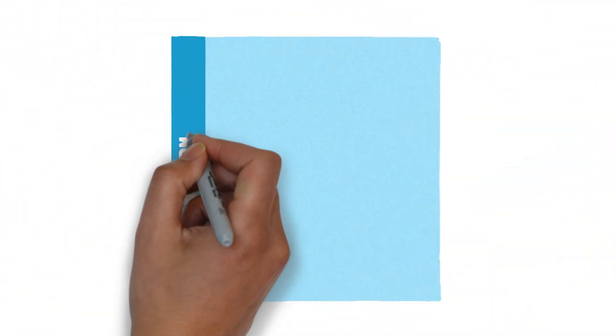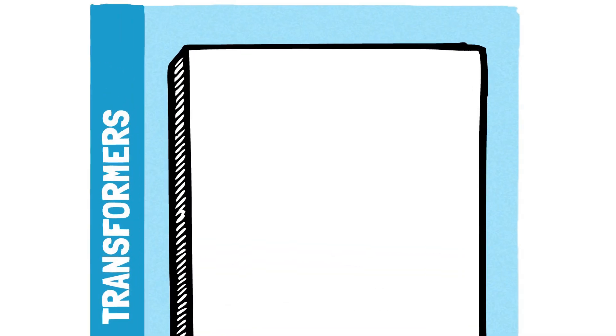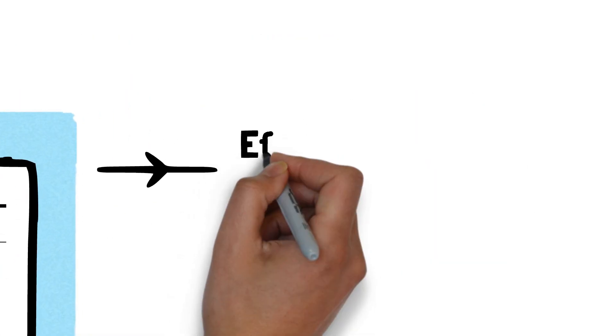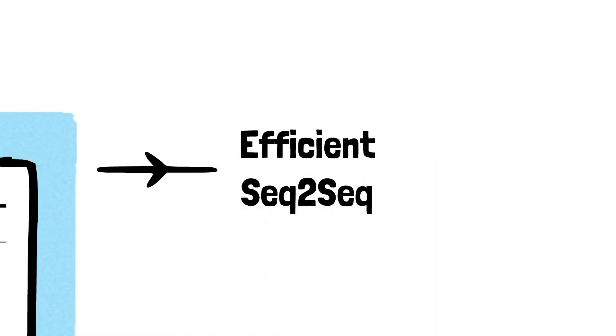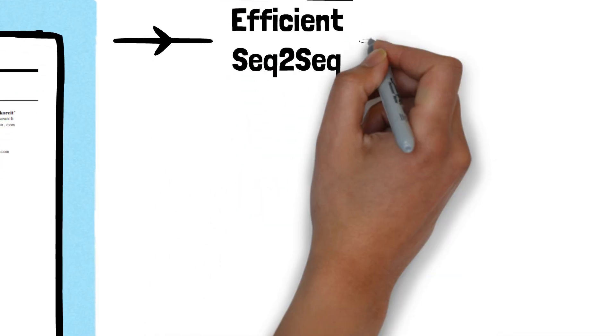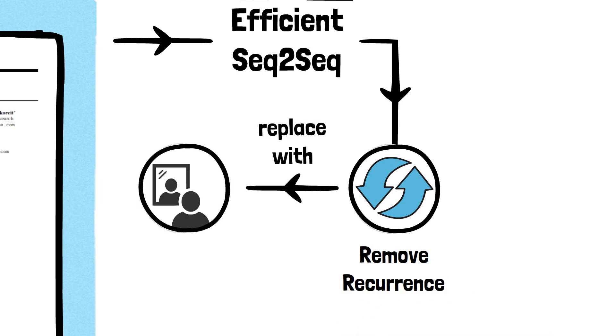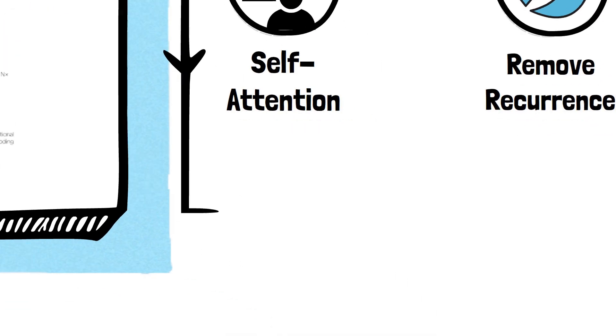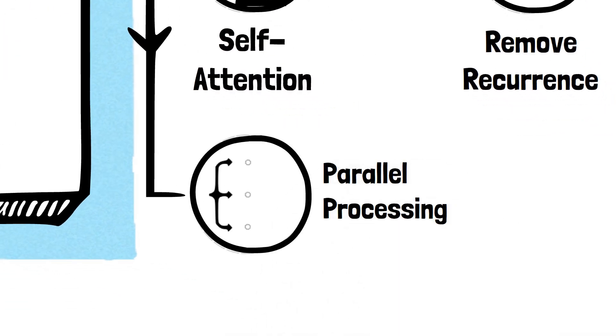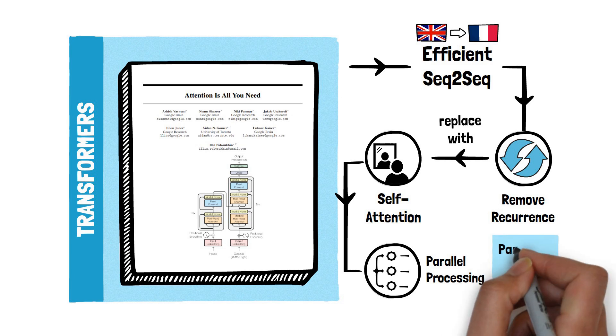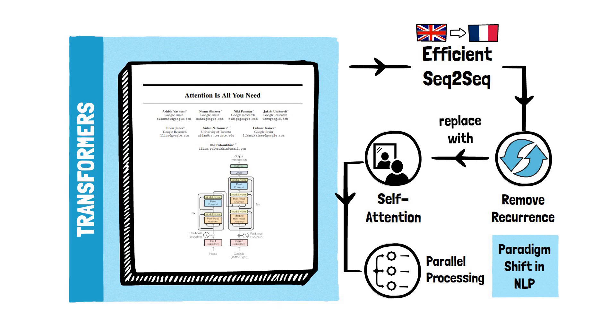The transformer architecture was presented in the 2017 landmark paper, Attention is All You Need. In this paper, the authors devised an efficient approach to handling sequence-to-sequence tasks such as language translation. They achieved this by replacing the recurrent layers with a so-called self-attention mechanism. This allowed them to parallelize computations and get considerably better performances than previous models that used RNNs. Although the paper did not set out to be revolutionary, its pragmatic approach inadvertently led to a significant shift in natural language processing and beyond.